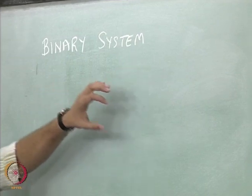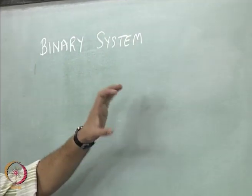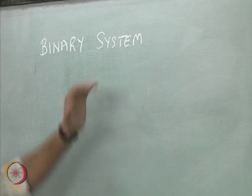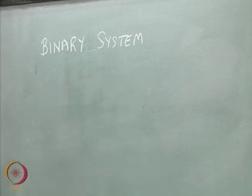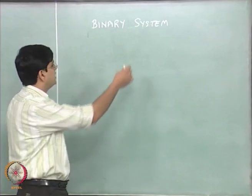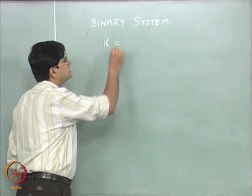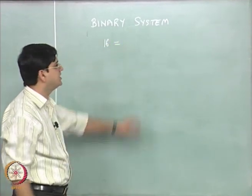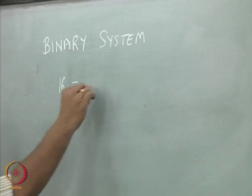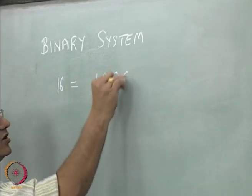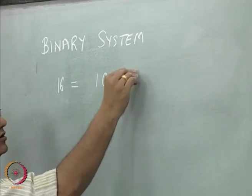The binary system uses numbers 0 and 1 to represent any number within the computer. For example, let us say we have the number 16. This number 16 in binary is going to be represented as 1 0 0 0 0.